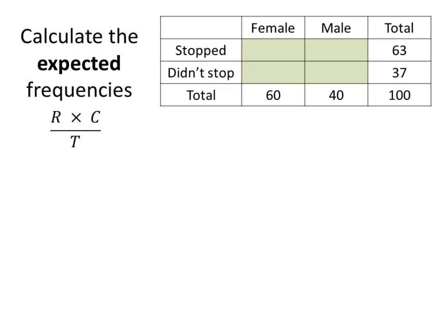We need to calculate these expected frequencies for each cell in our table by multiplying the row total by the corresponding column total then dividing the answer by the grand total. We'll label the cells to make it easier to follow.